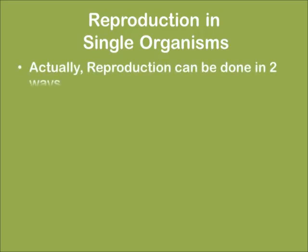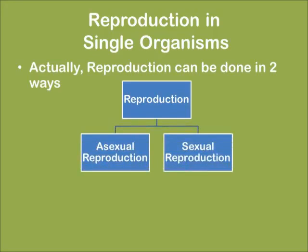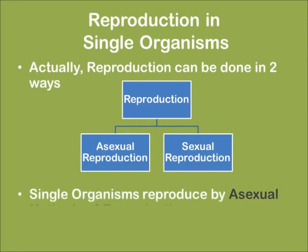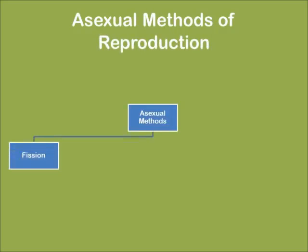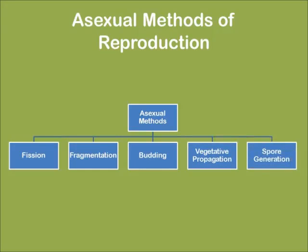Reproduction can be done in two ways: asexual reproduction and sexual reproduction. Single organisms reproduce by asexual methods of reproduction. The asexual methods of reproduction are fission, fragmentation, budding, vegetative propagation, and spore generation.